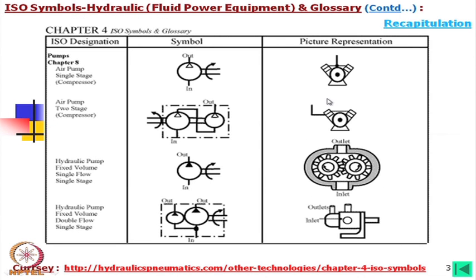If we look into the rotary actuator discussed earlier, this is the symbol for a rotary actuator. In this case the triangle is not filled, meaning this is for gas or air — this is a compressor. This compressor is two-stage: in the first stage, gas or air is pumped to a certain pressure, then it goes through the second stage to achieve high pressure output.